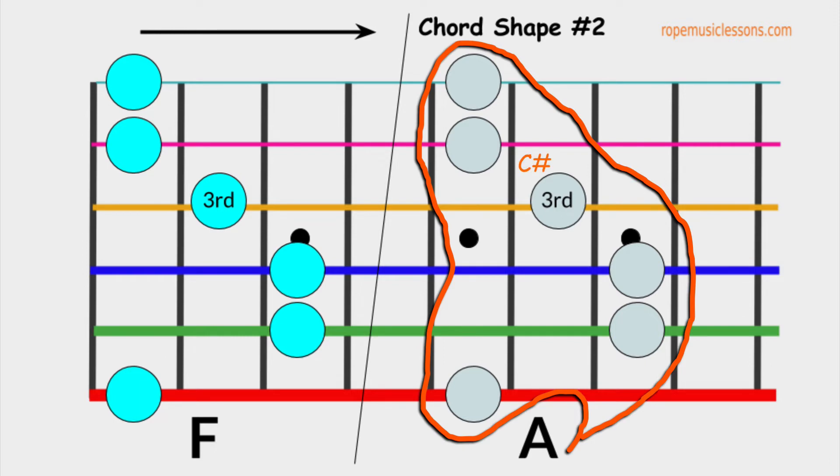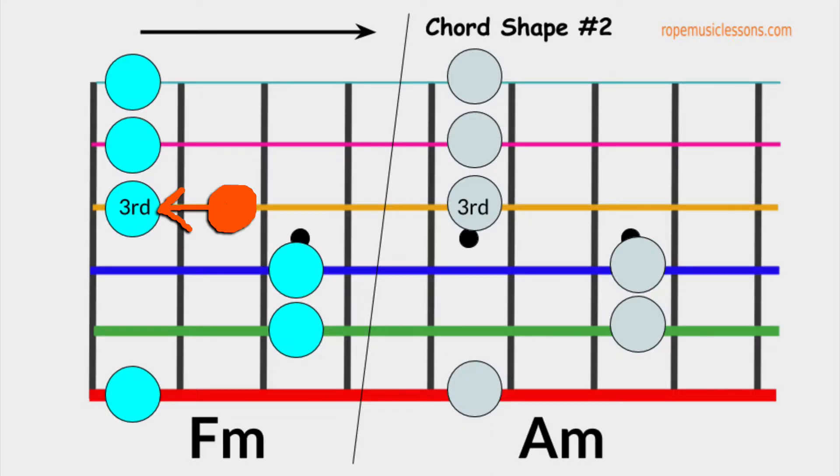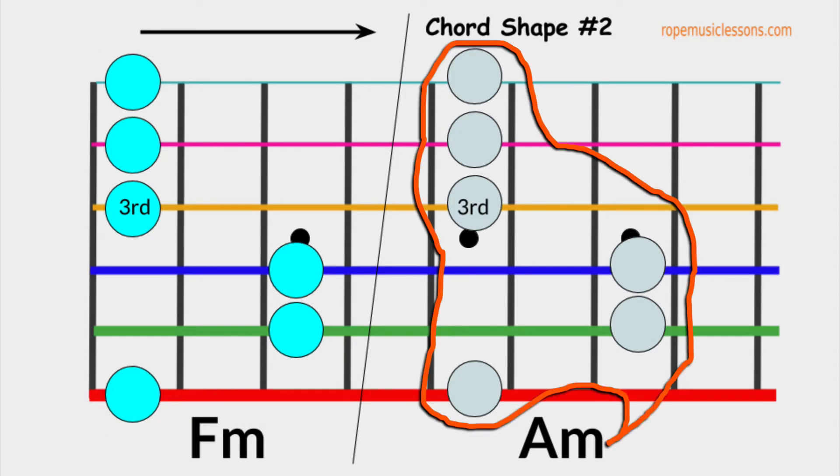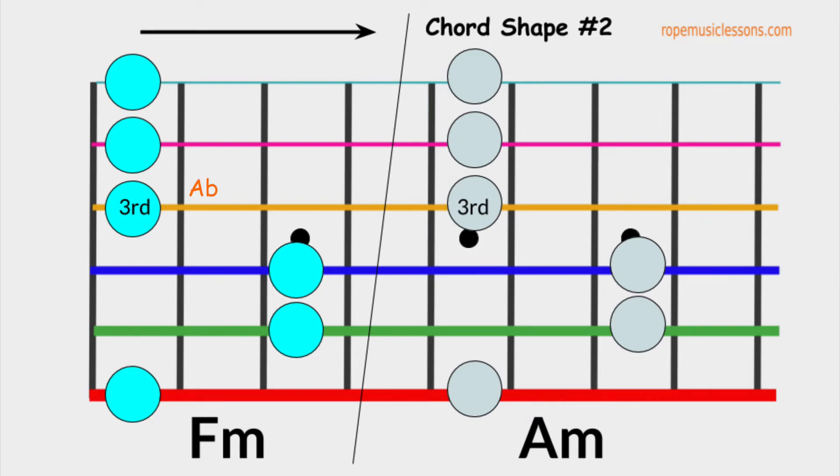With the same positions, we can derive the minor chords by lowering the third a half step. We now have F minor for the first chord and A minor for the second chord. The third of F minor is A flat and the third of A minor is C.